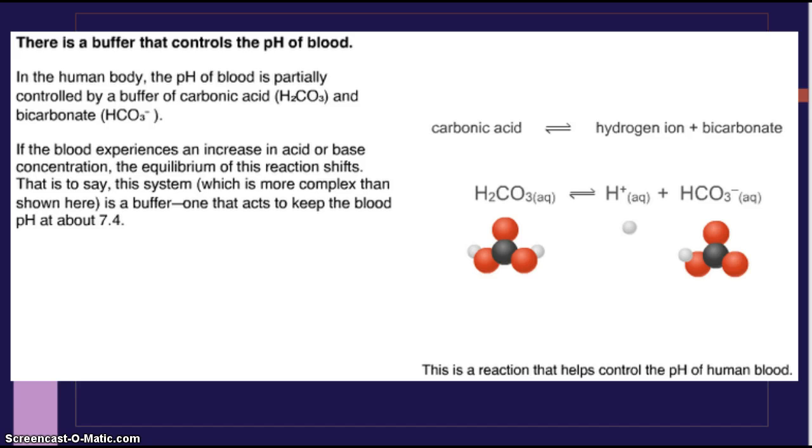There is a buffer that controls the pH of blood. In the human body, the pH of blood is partially controlled by a buffer of carbonic acid, H2CO3, and bicarbonate, HCO3-1. If the blood experiences an increase in acid or base concentration, the equilibrium of this reaction shifts. That is to say, this system, which is more complex than shown here, is a buffer, one that acts to keep the blood pH at about 7.4. So this is a reaction that helps control the pH of blood.